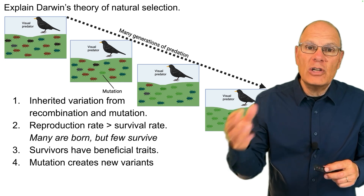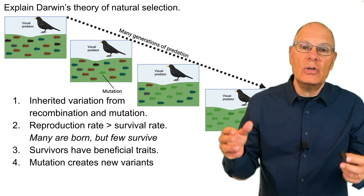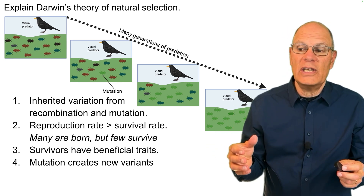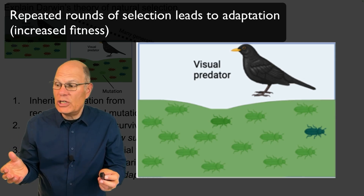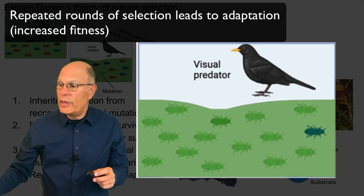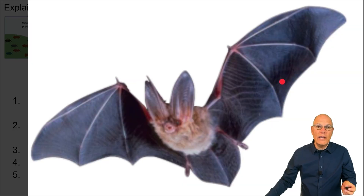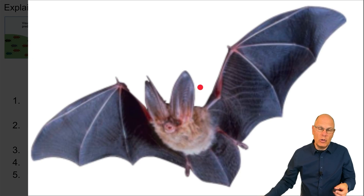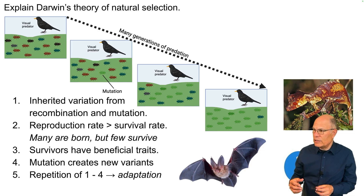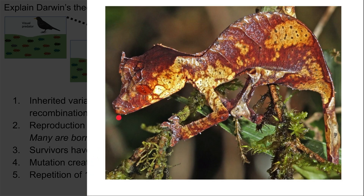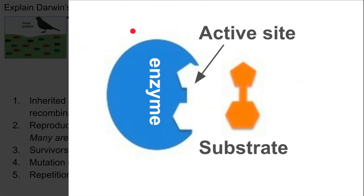As the generations proceed, mutation continues to create new variants. If you repeat these steps, you wind up with adaptation. Adaptations can include things like the incredible structure of the wing of a bat, or behavioral adaptations like sonar combined with structures like the bat's ears that can hear high-frequency sounds. They can also be camouflage mutations like the satanic leaf gecko, or adaptations on a molecular level, like the way enzymes fit with substrates.